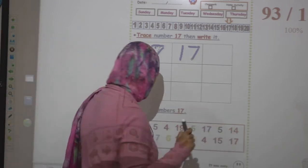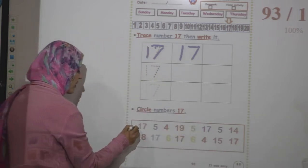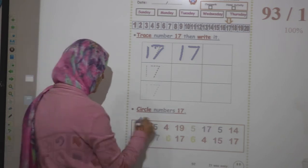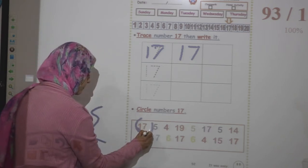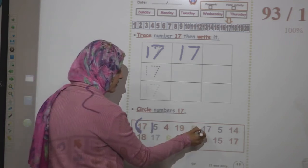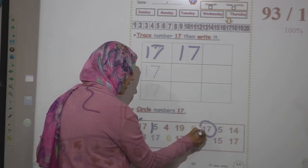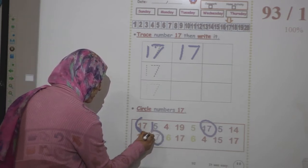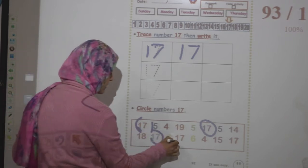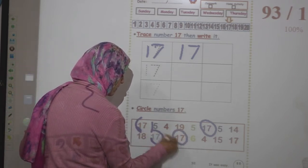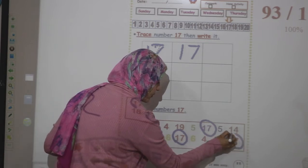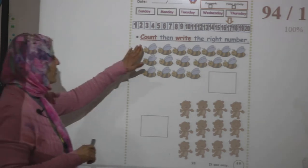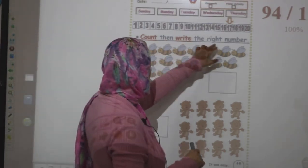Okay, here circle number 17 — we have to find where is number 17. Here, this is number 17, make a circle around it. And where is number 17? This is number 17, make a circle around it. Where is number 17? Make a circle around number 17. This is number 17 — make a circle around number 17. Okay, here come and write the right number.